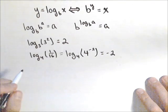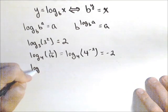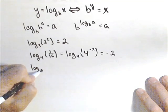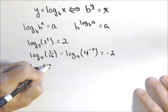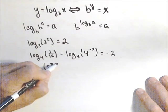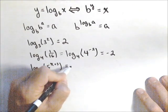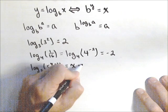So that's how this property works, even if what we have up in the exponent is an expression. So log base five of five to the x plus three would be equal to x plus three.